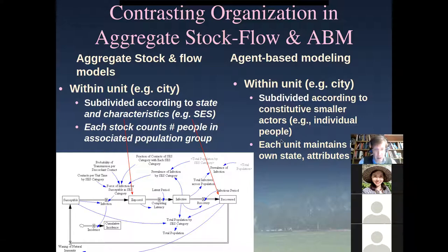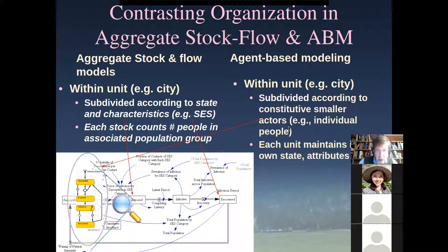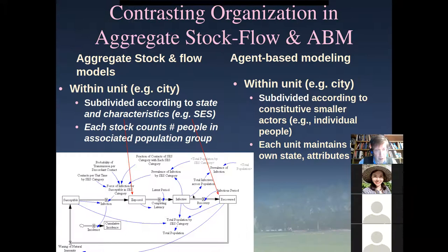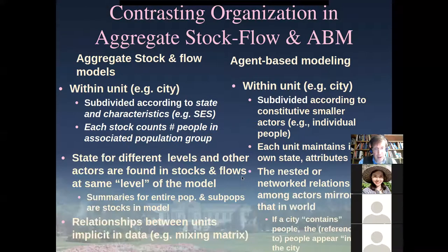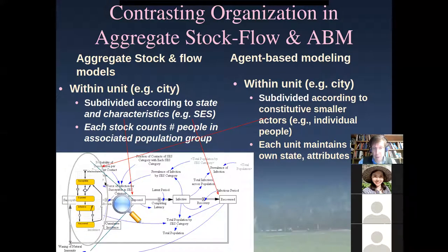We count the number who are infected. By contrast, agent-based modeling flips this on its head. Instead of subdividing the model according to state or characteristics, we subdivide according to individuals — individual actors. Those are the units of agent-based modeling, not stocks and flows, but individual actors. Each individual keeps track of their own state and characteristics; there's no overall repository of state — instead, it's distributed among the different individuals.